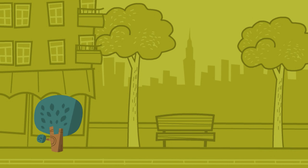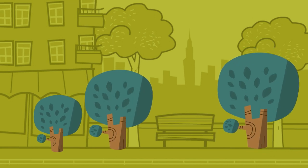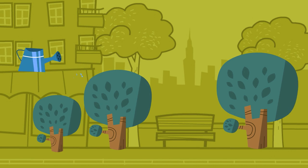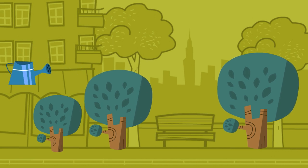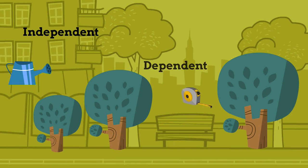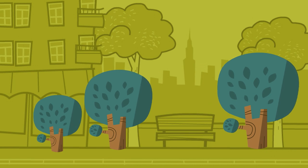Let's look at a couple other examples. The height of a tree depends on the amount of water it receives. The amount of water the tree receives is the independent variable, and the height of the tree is the dependent variable because it depends on the amount of water it receives. You are measuring the height of each tree.